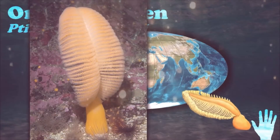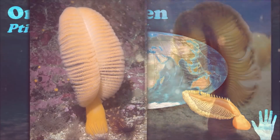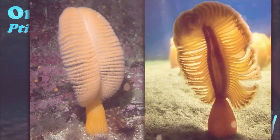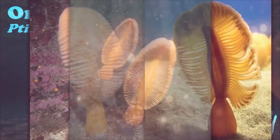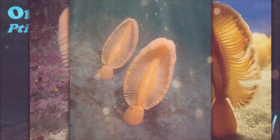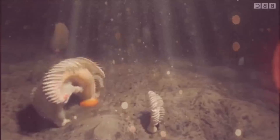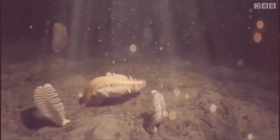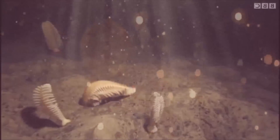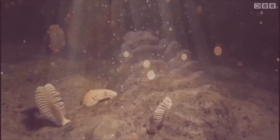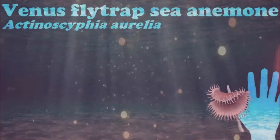The orange sea pen feeds on plankton, which it catches with the tentacles on its feathery plumes. It orients itself at right angles to the current and can relocate to a new location if it wishes. When the colony is disturbed, it can pump water out and retract into its bulbous base, emitting bioluminescence perhaps to startle a potential predator. Certain starfish prey on the orange sea pen.